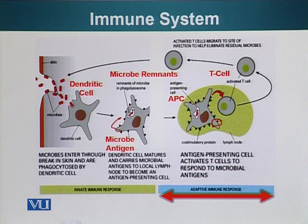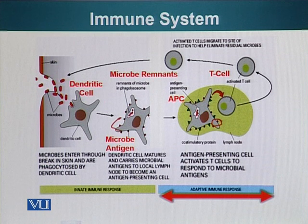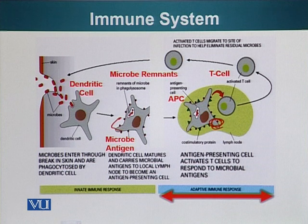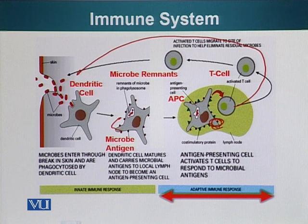Dendritic cells are part of the innate immune system because they are not specific — they will eat any microbe, whether bacteria or virus, regardless of type. The adaptive immune system, which includes T cells and B cells, is specific. We have many different types of T cells in our body, but only the T cells that can recognize a particular pathogen get activated. For example, only T cells that can recognize pieces of Salmonella will get activated, and they will go back to the site of infection and help other phagocytic cells kill and destroy the Salmonella.